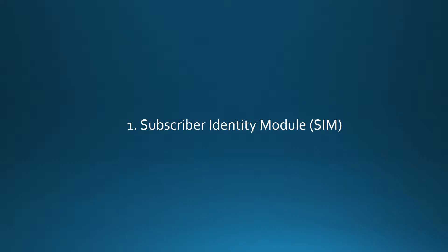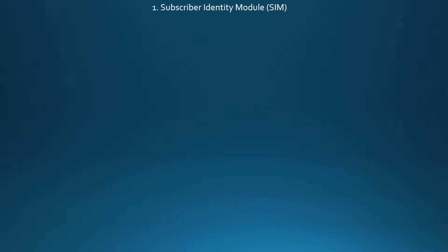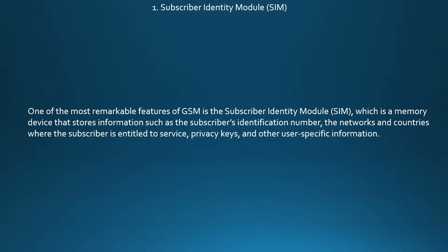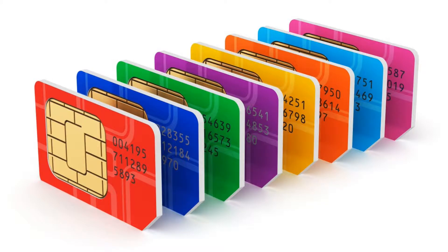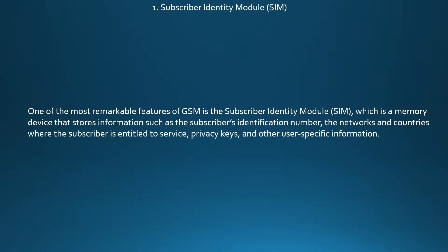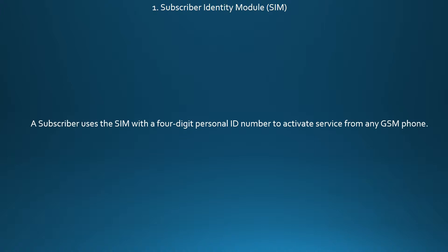First, Subscriber Identity Module. One of the most remarkable features of GSM is the Subscriber Identity Module, which is a memory device that stores information such as the subscriber's identification number, the networks and countries where the subscriber is entitled to service, privacy keys, and other user-specific information. A subscriber uses the SIM with a four-digit personal ID number to activate service from any GSM phone.